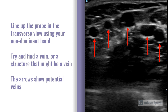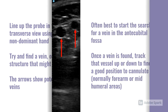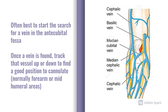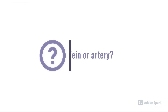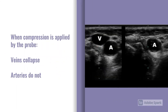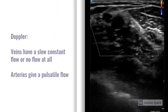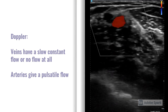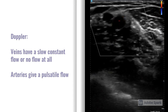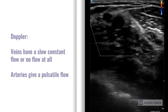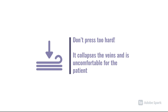We generally start in the antecubital fossa, but any suitable vein is satisfactory. You can find deeper veins there and track up into the humerus area or down into the forearm. If access has to be in a slightly atypical position, any access is better than none. To distinguish a vein from an artery: veins will collapse when you apply pressure, whereas arteries won't. Alternatively, use the Doppler — veins have little to no flow, whereas arteries have a pulsatile flow that's easy to distinguish, which is especially useful for smaller, deeper arteries. Avoid pressing too hard as it's uncomfortable and will collapse the target vein.